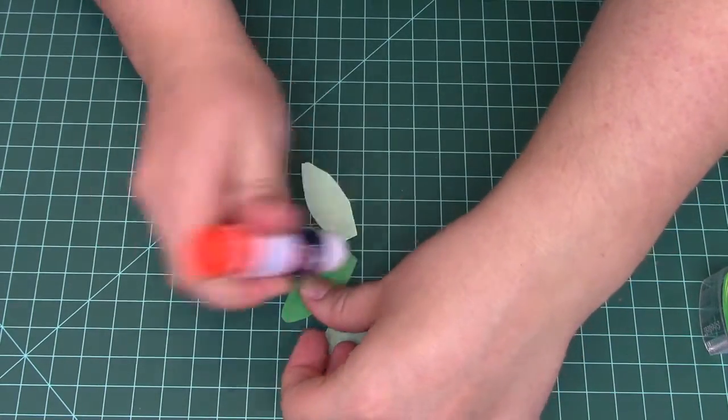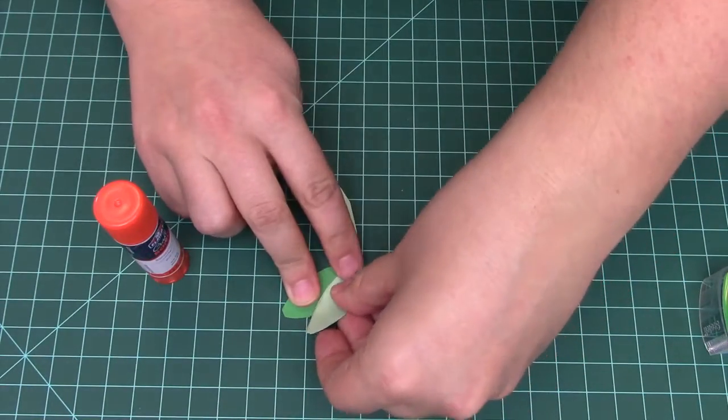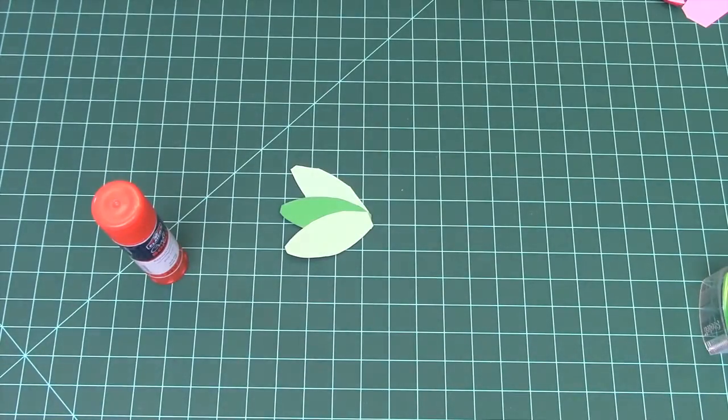And finally, we'll add some decorative leaves to our stem. Use a glue stick or some tape to connect the leaves together. And then glue or tape the leaves onto the stem.